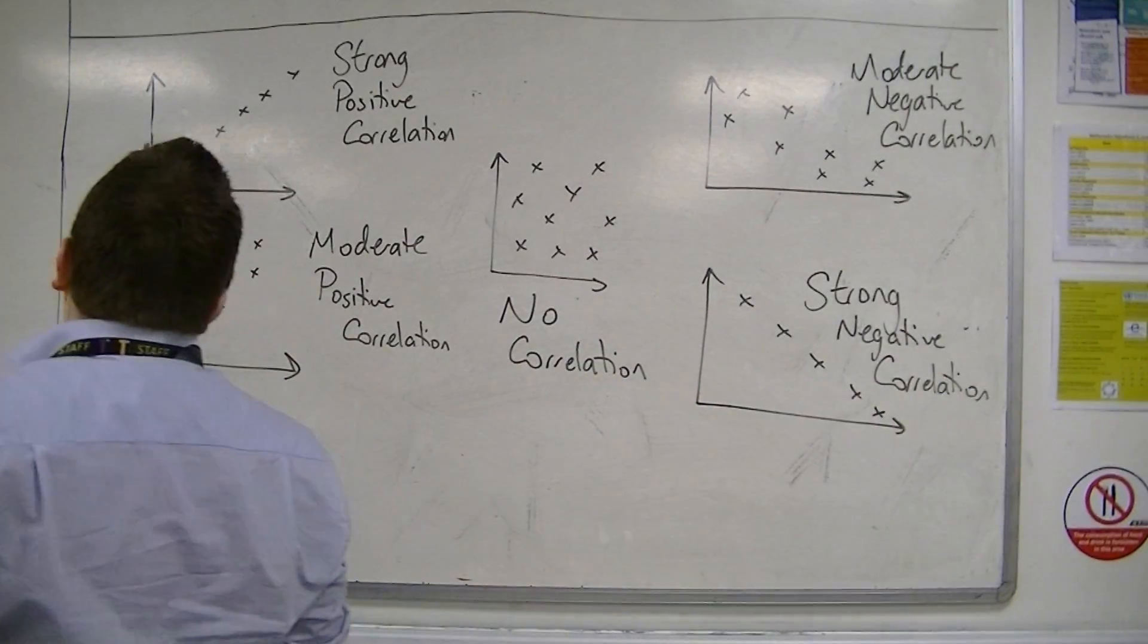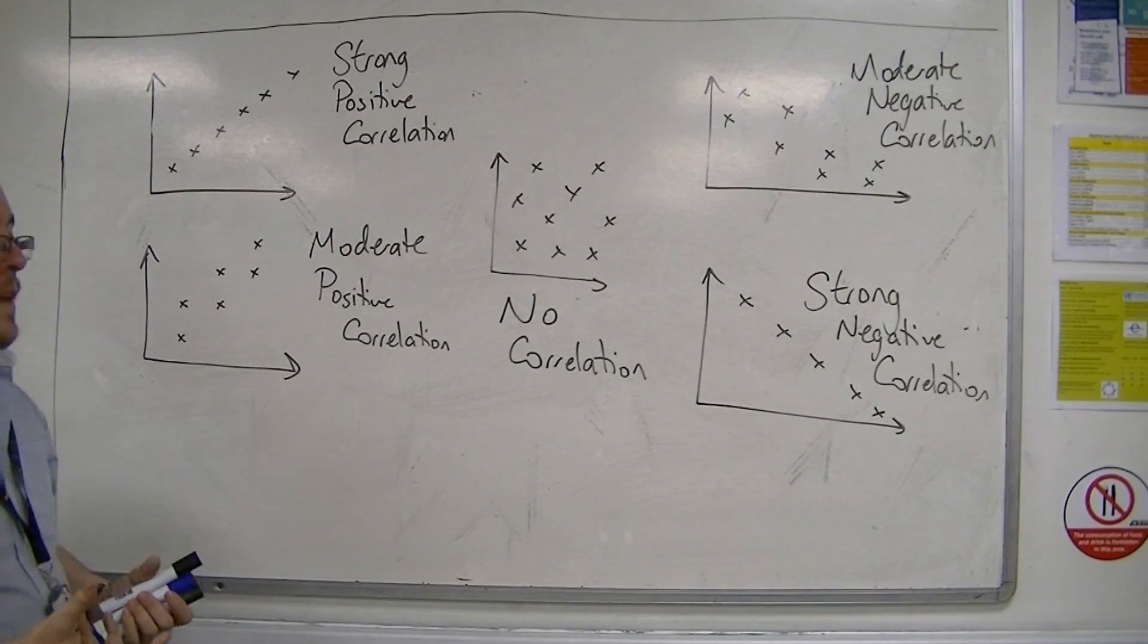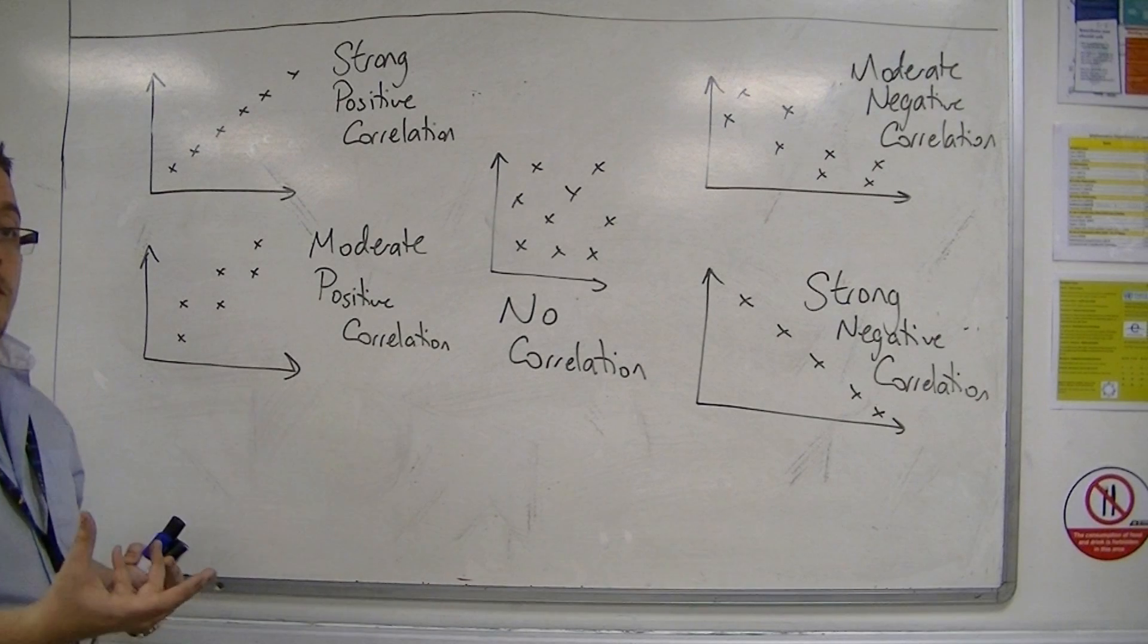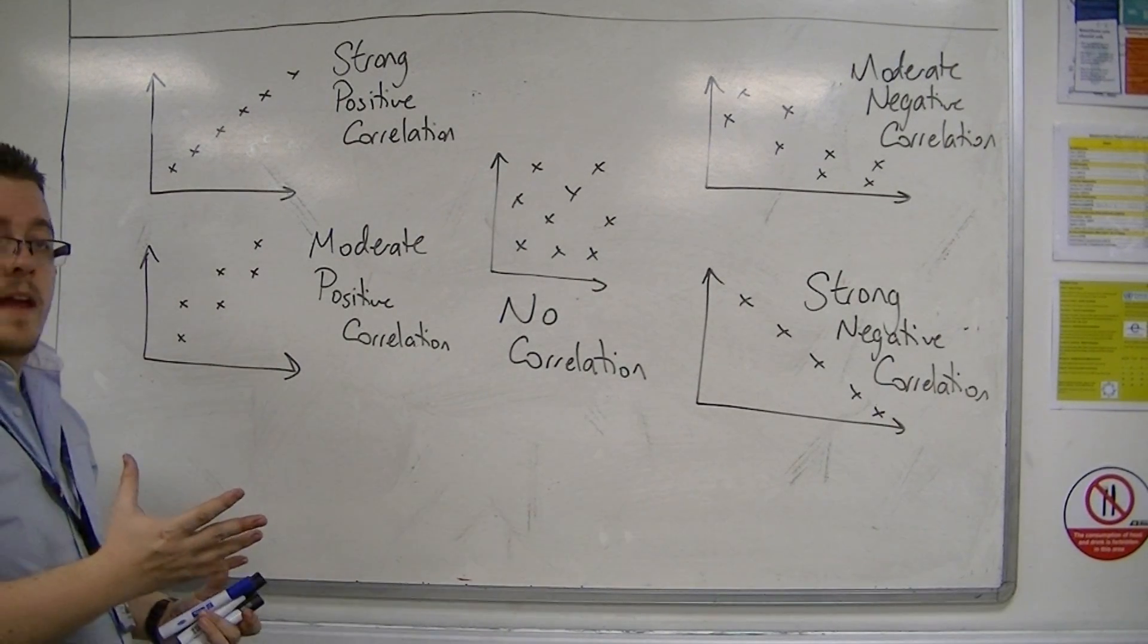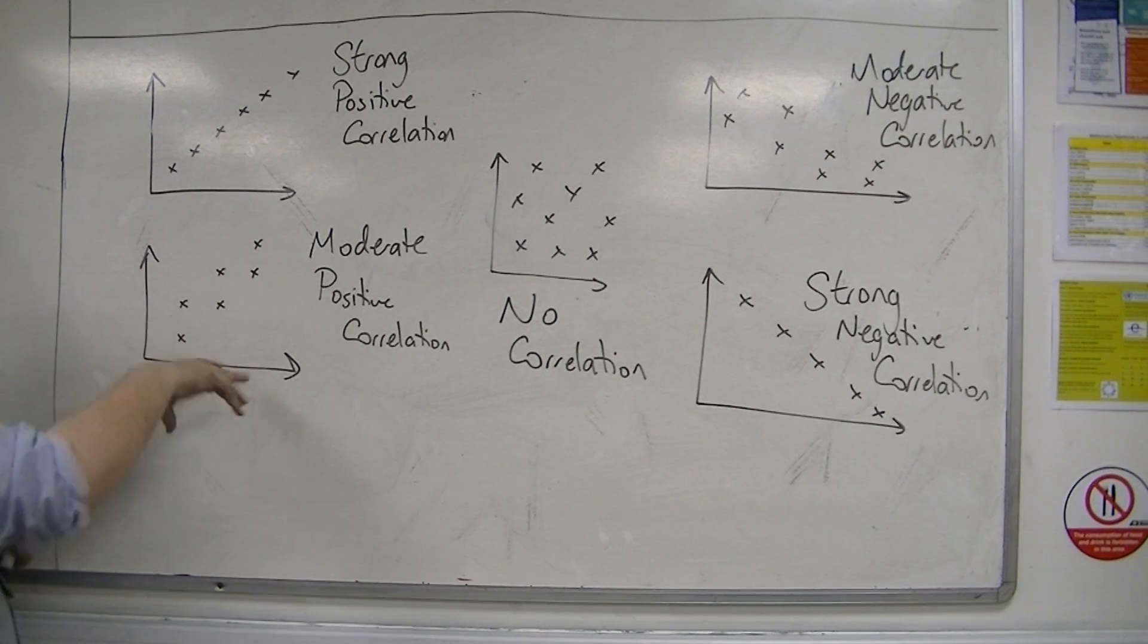But we're more thinking about topics like height and weight of a certain group of people. So height and weight. The taller someone gets, the heavier they get, for example. We would expect that to be around moderate positive correlation.